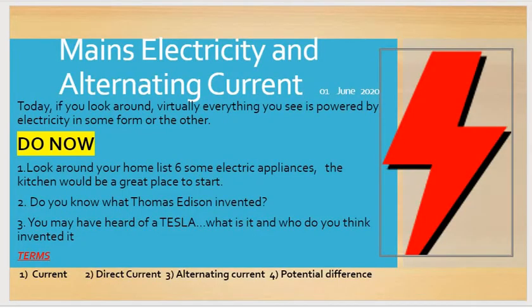I do now activity: in your book, make sure you've got the heading alternating current and the date. You're going to list six appliances that you use in your home that are electrically charged. From the video, do you remember what did Thomas Edison invent? And Tesla, have you heard of Tesla? Do that now. Pause the video.